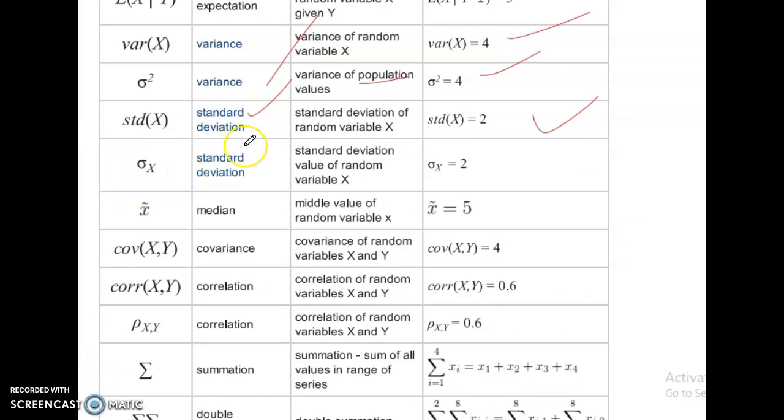Median. Median value of random variable X is equal to 5. Covariance of X comma Y. Covariance of random variables X and Y. Covariance of X comma Y is equal to 4.